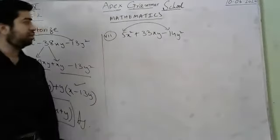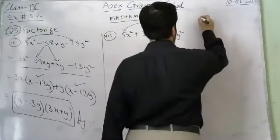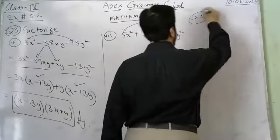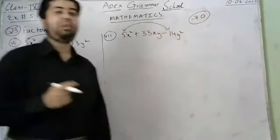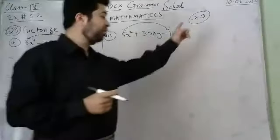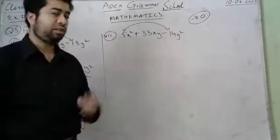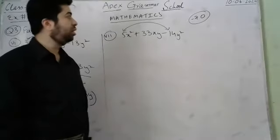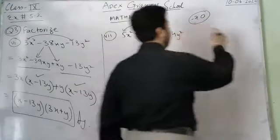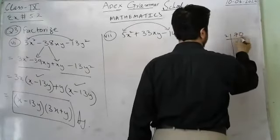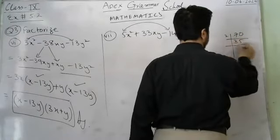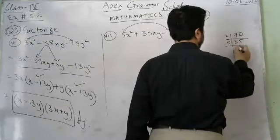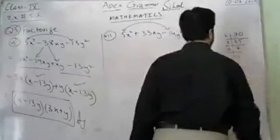Multiply the first coefficient 5 by minus 14 to get minus 70. We need two numbers whose multiplication gives minus 70 and whose addition gives plus 33. Trying the pair 10 and 7: minus 10 minus 7 gives minus 17, and minus 10 plus 7 gives minus 3. Neither gives plus 33, so this pair does not work.